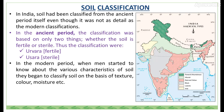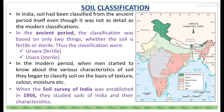In the modern period, when people started to know about the various characteristics of soil, they began to classify soil on the basis of texture, color, moisture, etc. When the Soil Survey of India was established in 1956, they studied soils of India and their characteristics.